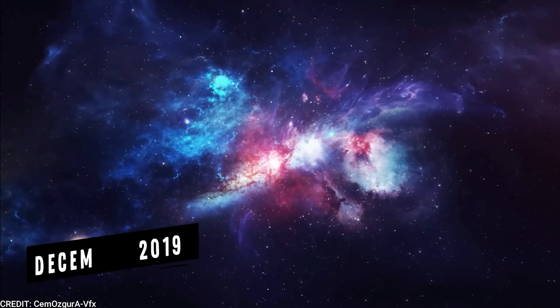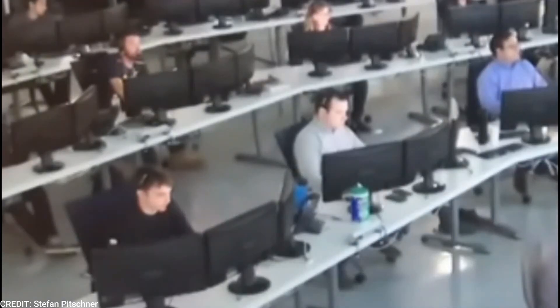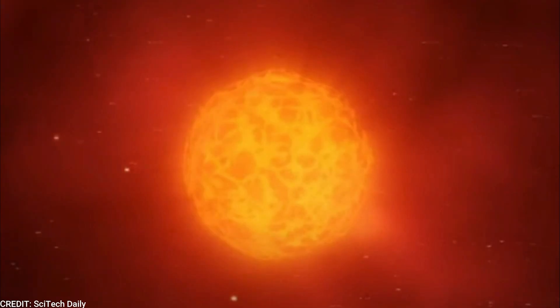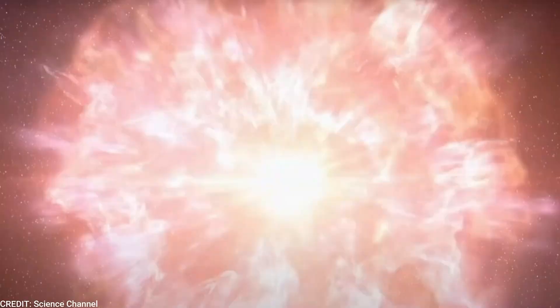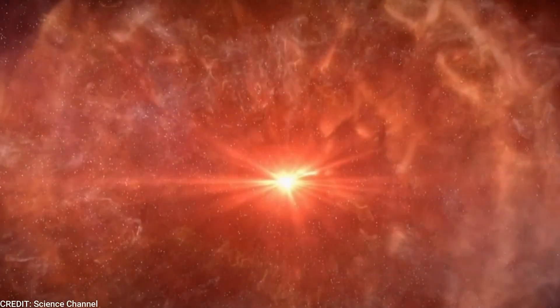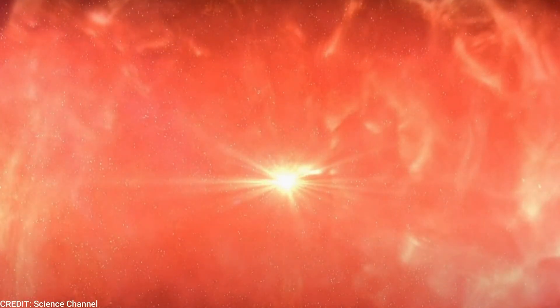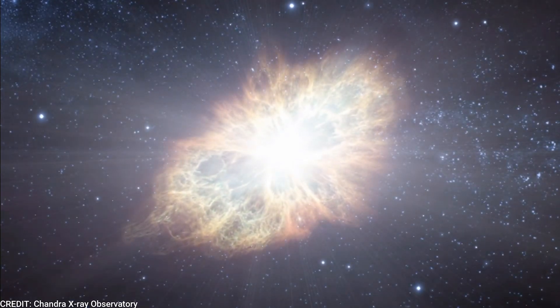Beginning in December 2019, scientists saw a peculiar and significant attenuation in the light coming from the brilliant red star Betelgeuse in the Orion constellation. They were perplexed by the phenomena and speculated that it may be an indication that the star was going to go supernova in the near future.